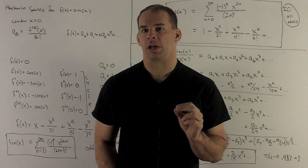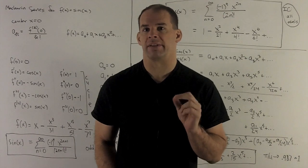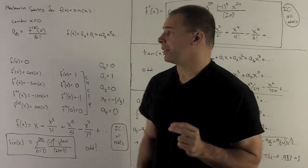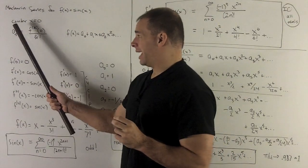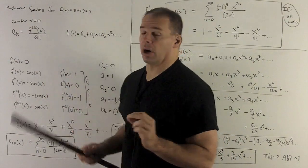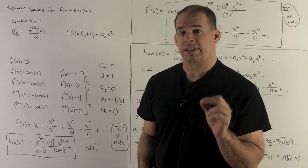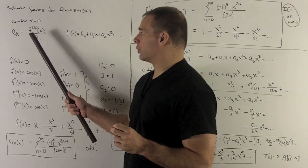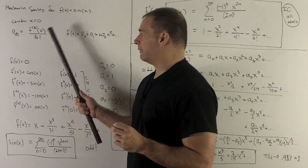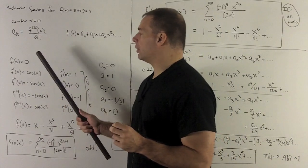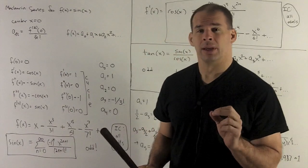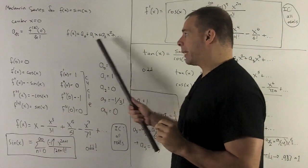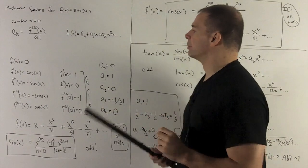I want to find the Maclaurin series for sine of x. Recall, Maclaurin series means our center is going to be at x equals 0. We're going to use the Taylor coefficient formula: a sub k equals the k-th derivative of f evaluated at 0, divided by k factorial. We take all those coefficients and load them up into a power series.